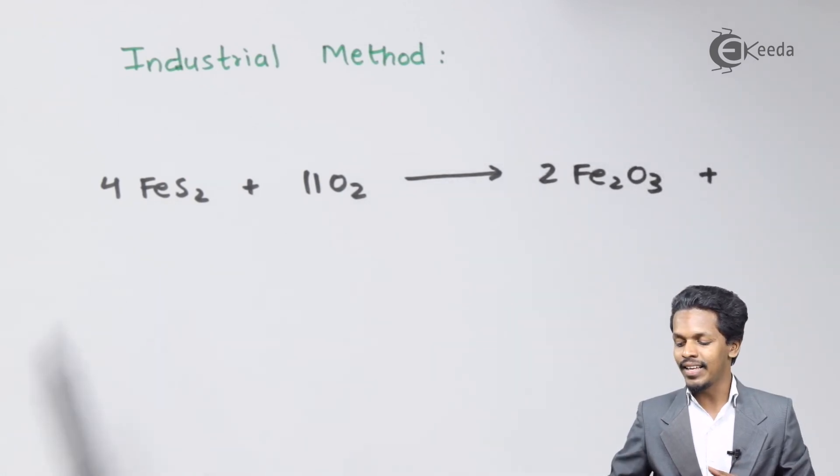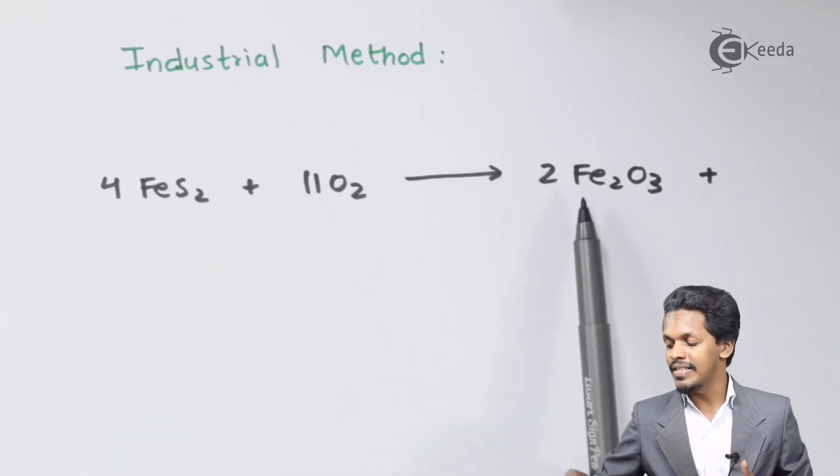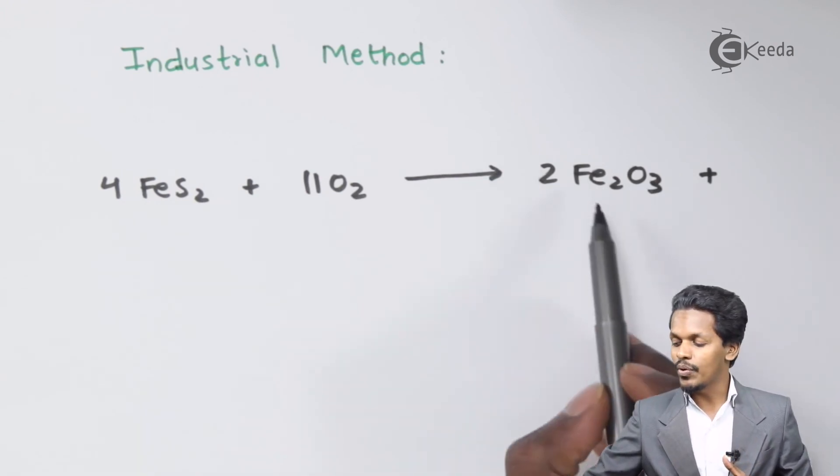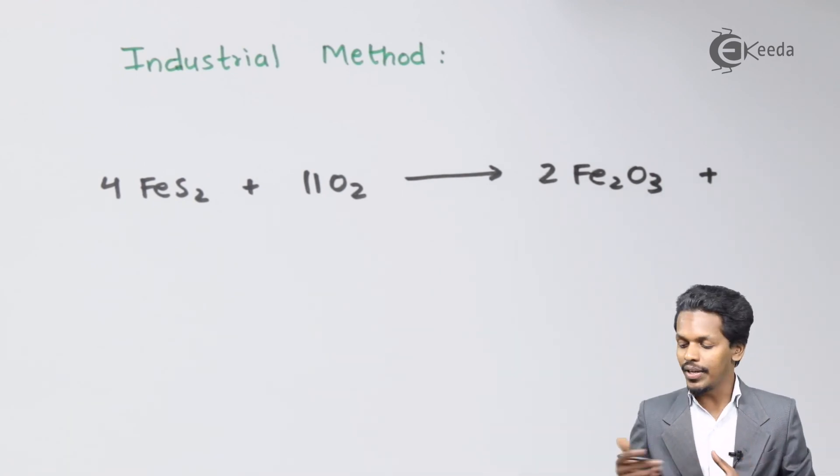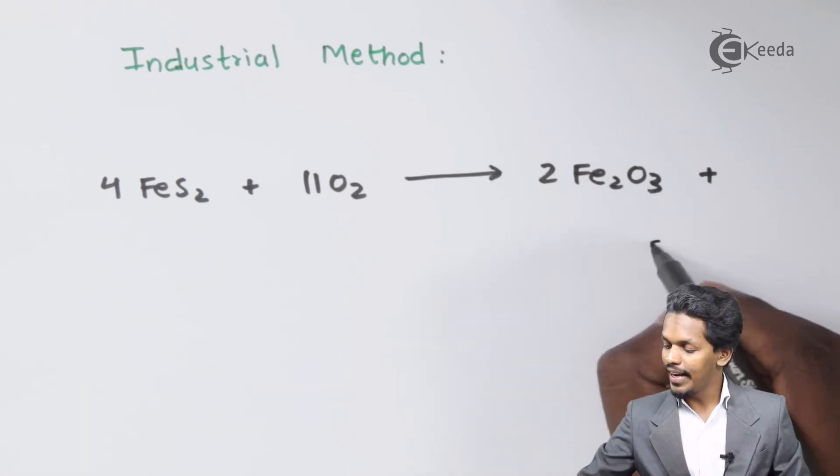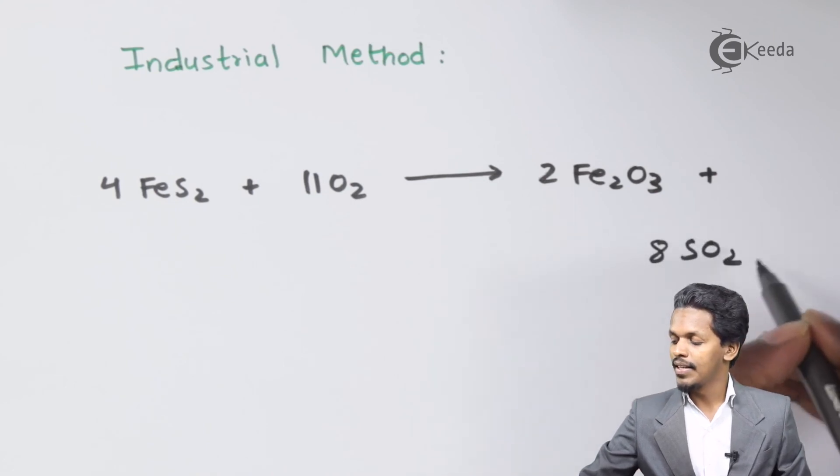The pyrites get oxidized to form Fe₂O₃ as the main product, while the byproduct we get is 8 moles of SO₂. This is how we can obtain sulfur dioxide.